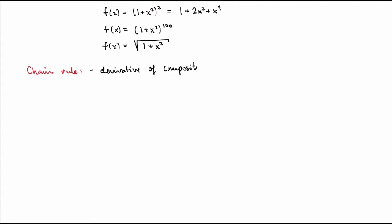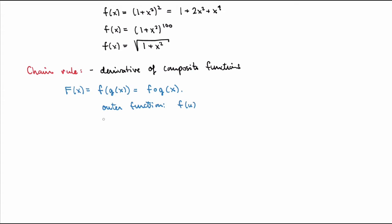I should first recall what composite functions are. A composite function, say F(x), will be a function f of another function g(x), using the notation of composition of functions. In other words, there's an outer function — which would be f(u) — and an inner function, which is where the outer function is evaluated at, so u = g(x).